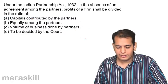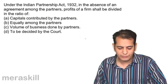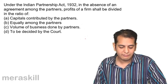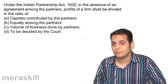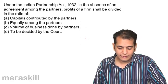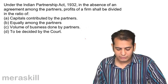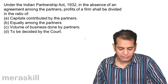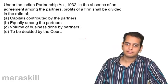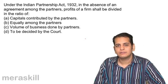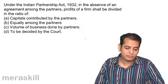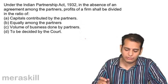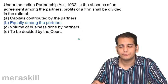Under the Indian Partnership Act 1932, in the absence of an agreement among partners, profit of a firm shall be divided in the ratio of: a) capitals contributed by partners, b) equally amongst the partners, c) volume of business done by the partners, d) to be decided by the court. If the partnership deed is silent, the act says profits are shared equally.